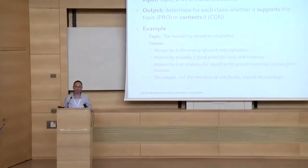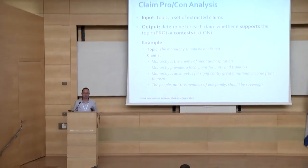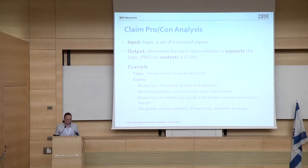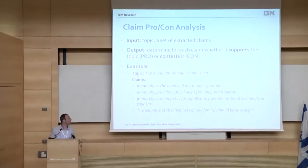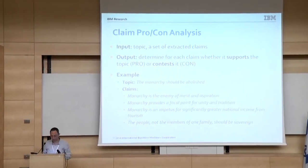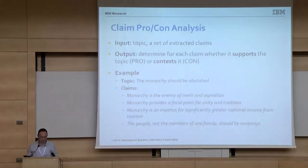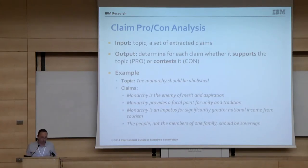In Claim Pro-Con Analysis, we are given a topic and a set of claims extracted for this topic, and we need to determine for each claim whether it supports or contests the topic — whether it's a pro claim or a con claim. Here's an example: we have the topic 'the monarchy should be abolished,' and here are a few claims that human labelers identified for this topic in Wikipedia. Let's take a few seconds to think for each of them whether it supports or contests the topic.